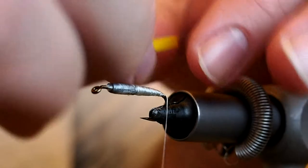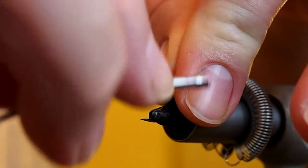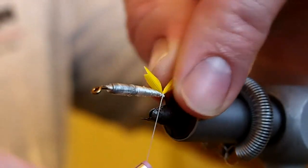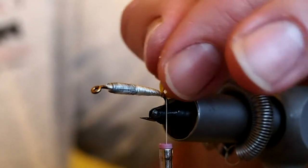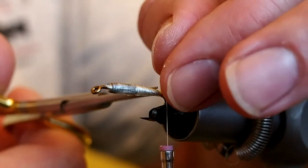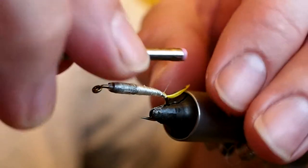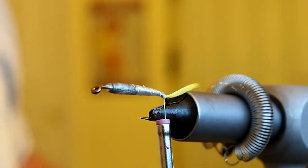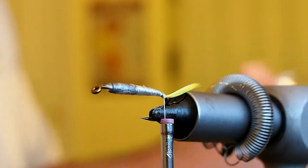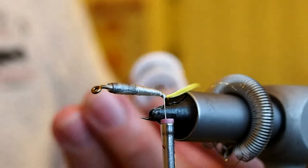It'll be a little long. There we are. And just snip away our excess. Alright, next we need to tie in some silver tinsel, that'll be used as ribbing. Just kind of narrow silver tinsel here. Cut out about 6-8 inches of that.